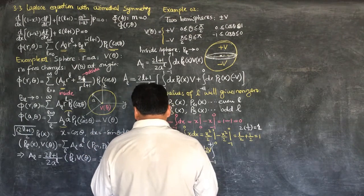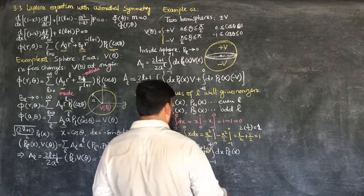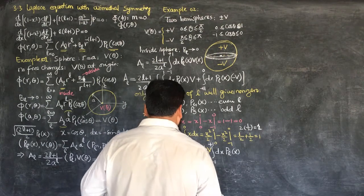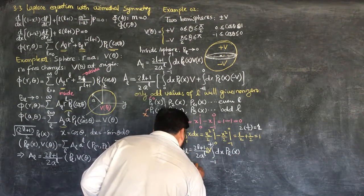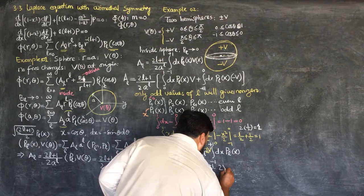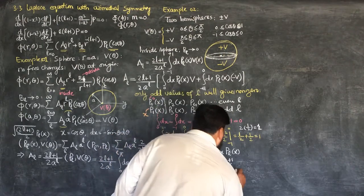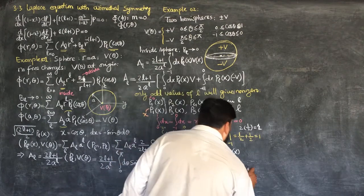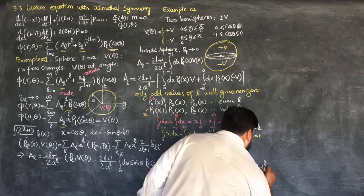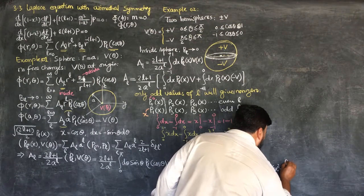And we are left with dX P_L of X. So our A_L is equal to this. I can put the polynomial in: A_L equals (2L+1) over 2A to the power L, times 2V, and from minus 1 to plus 1, dX times (1 over 2^L) times L factorial, times d^L over dX^L, times (X²−1) to the power L.